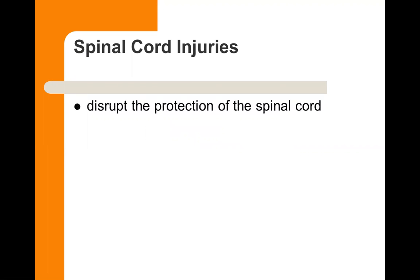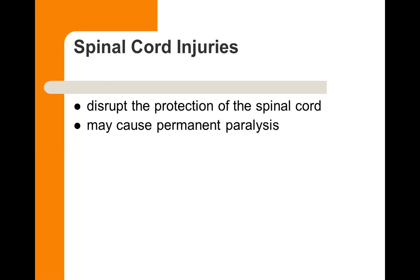The big problem with spinal cord injuries is they disrupt the protection of the spinal cord. The spinal cord is surrounded with fluid, and if it gets even pinched — even a millimeter — that could cause disruption of messages coming from the brain going to the muscles, telling the muscles what to do. If it's permanent, it could be permanently damaged and that would cause paralysis, because those muscles further along the path will never receive the message.